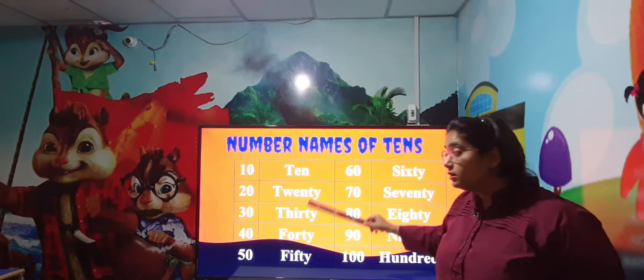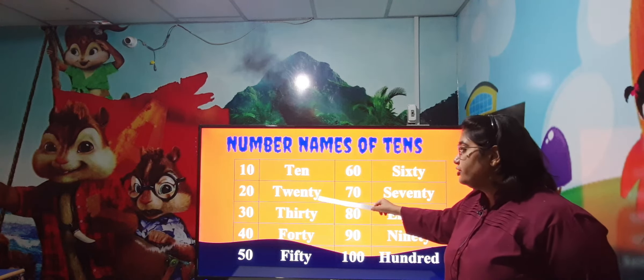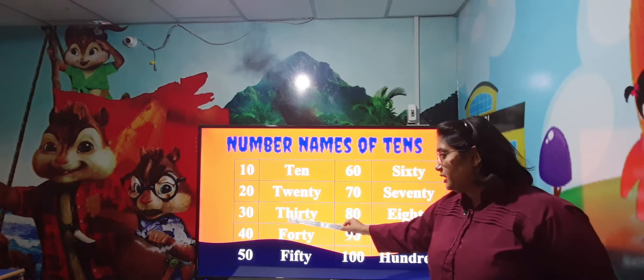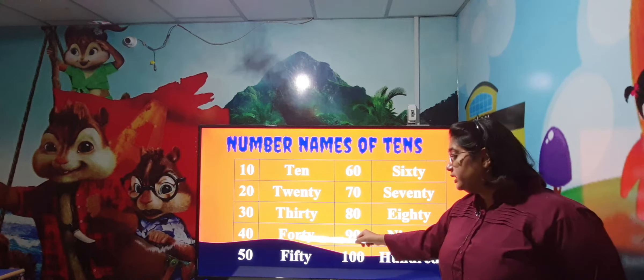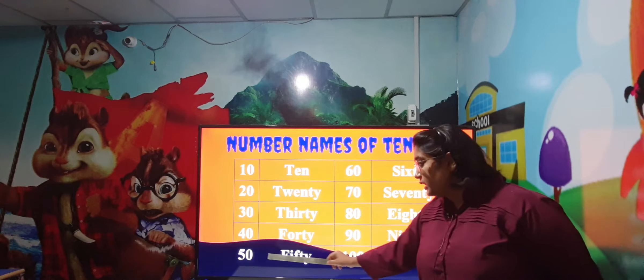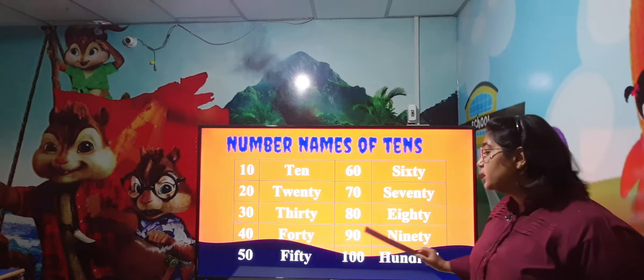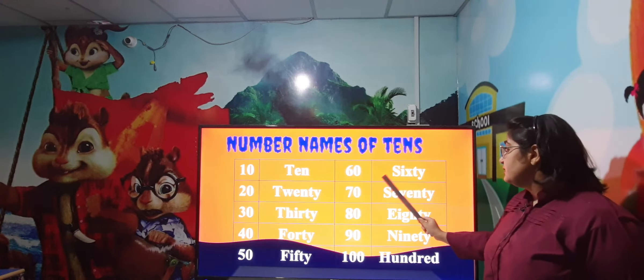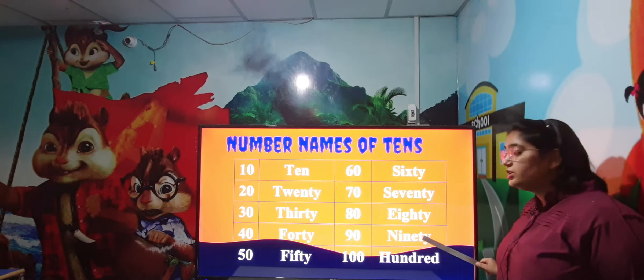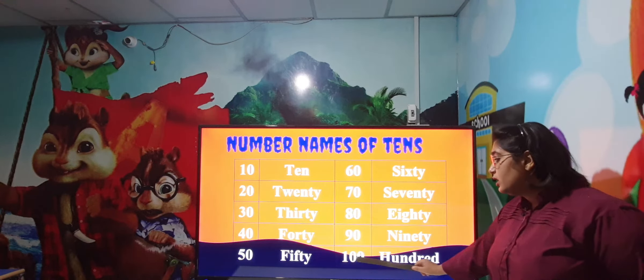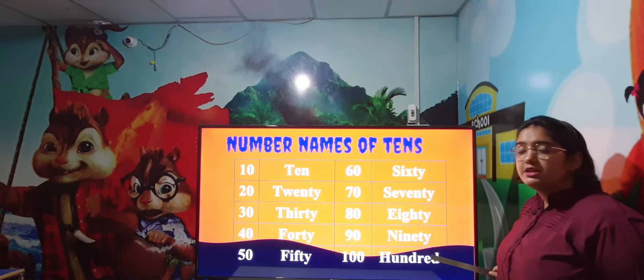10 - TEN, 20 - TWENTY, 30 - THIRTY, 40 - FORTY, 50 - FIFTY, 60 - SIXTY, 70 - SEVENTY, 80 - EIGHTY, 90 - NINETY. And last is your 100 - HUNDRED.